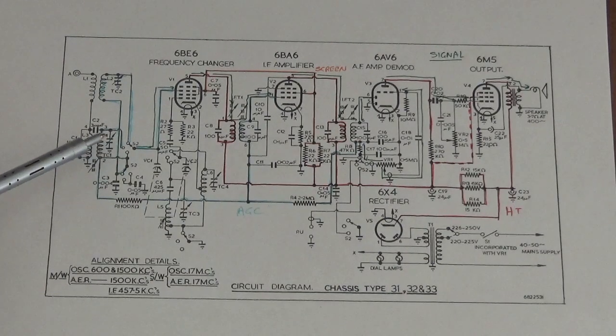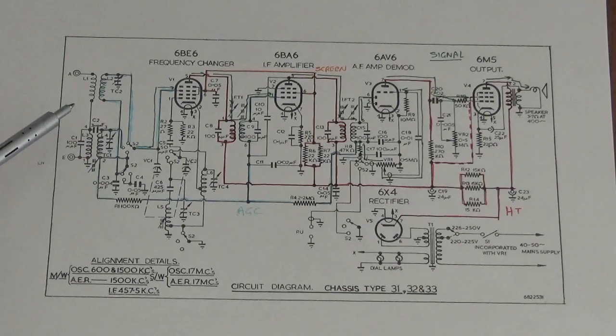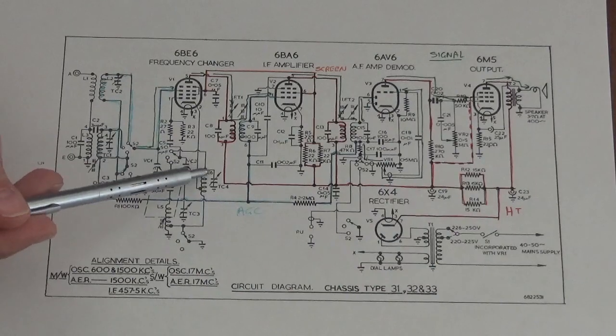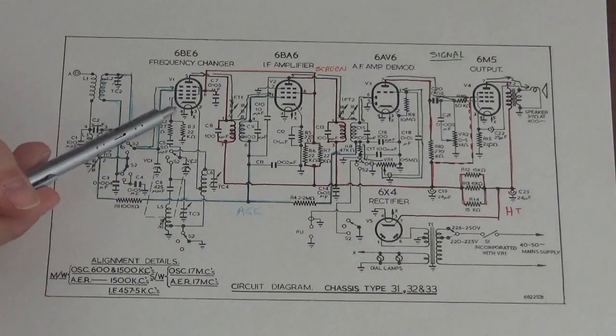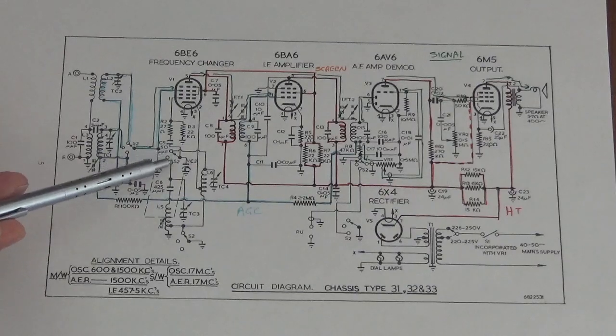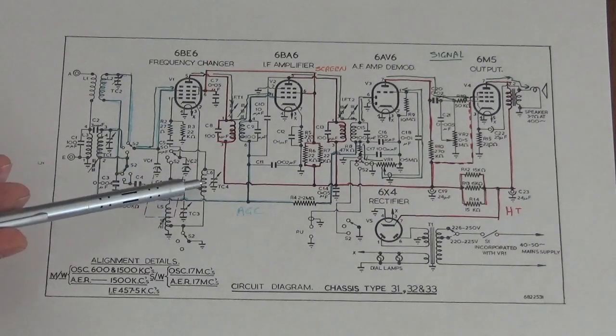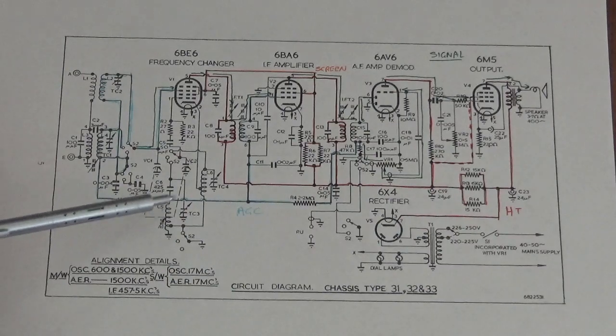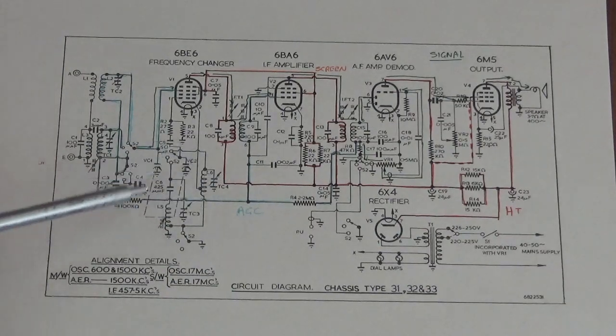L3 and L4 are for the medium wave, the L1 L2 transformer is for the short wave. In the grid circuit of this particular valve we also have a couple of other tuned circuits which are switched in. We've got a different tuned circuit for short wave and medium wave for the local oscillator.